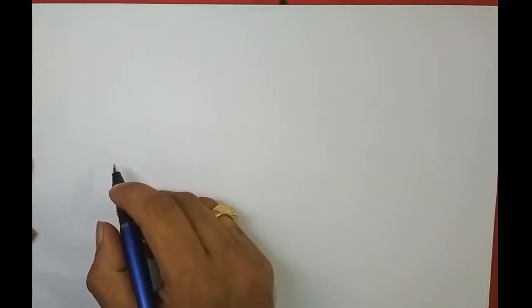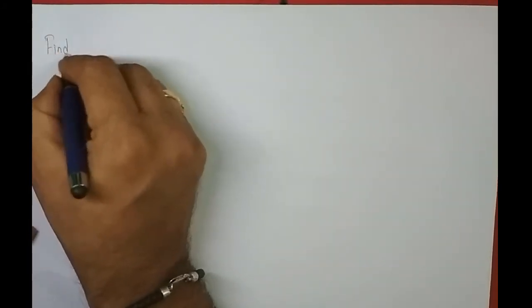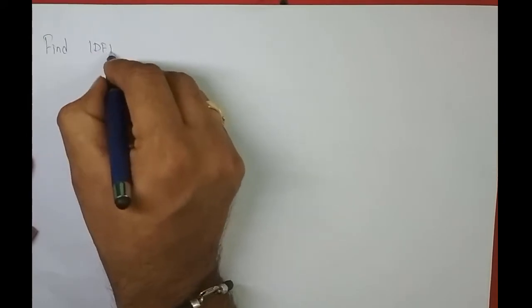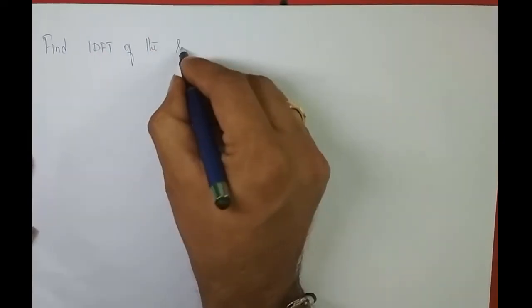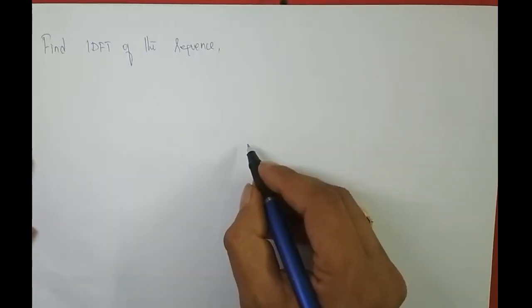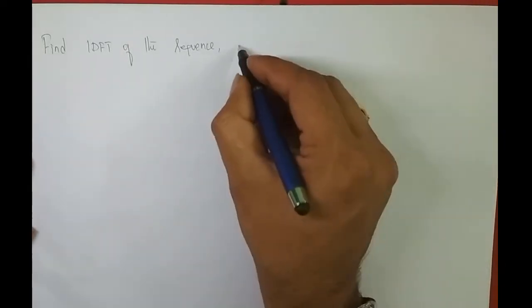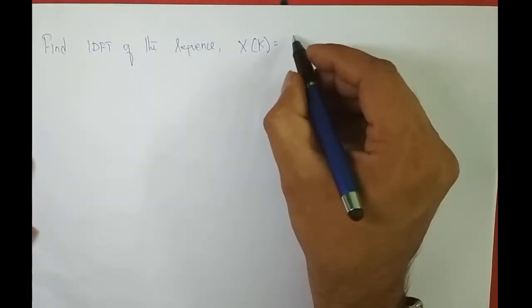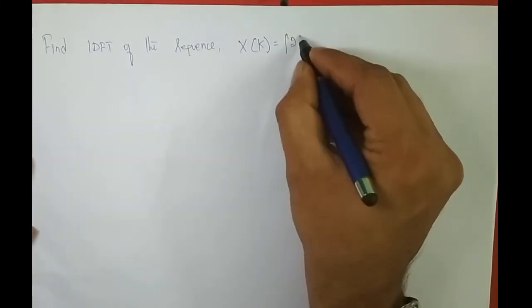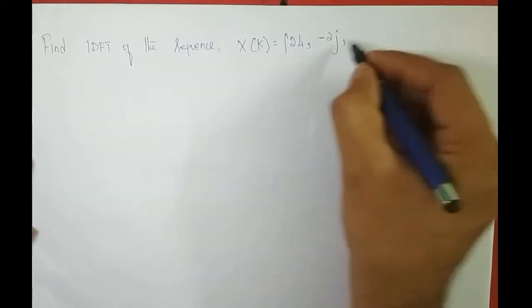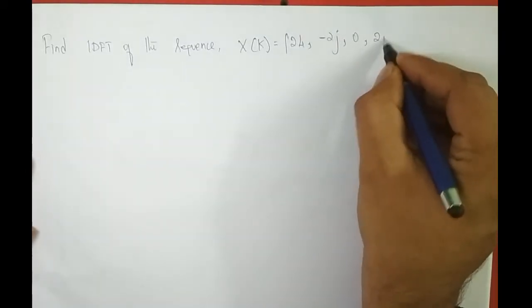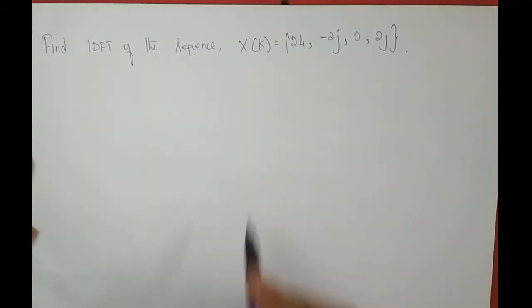So far we found DFT. Now we will take up a problem to find IDFT. They will give us X of k in the frequency domain and we have to find x of n in the time domain. The sequence is X of k = {24, −2j, 0, +2j}, and we need to find its IDFT.